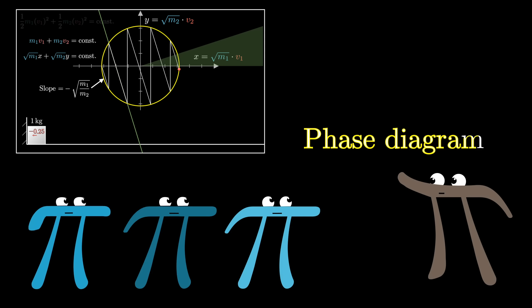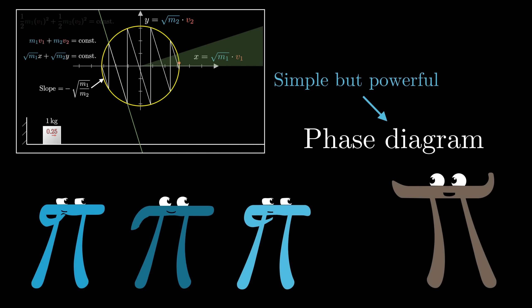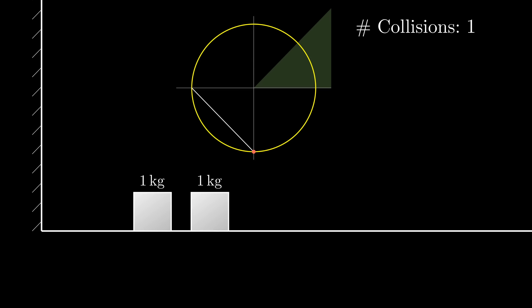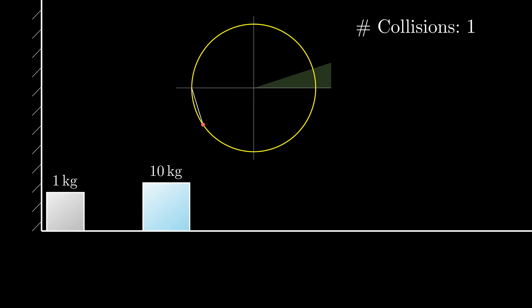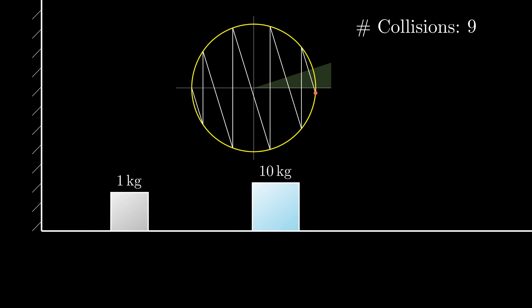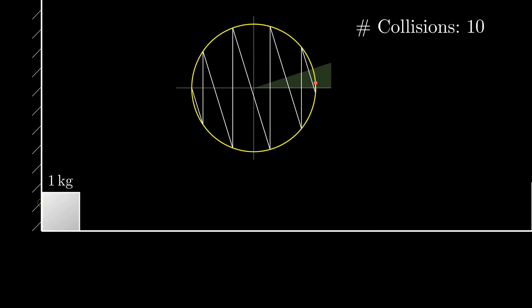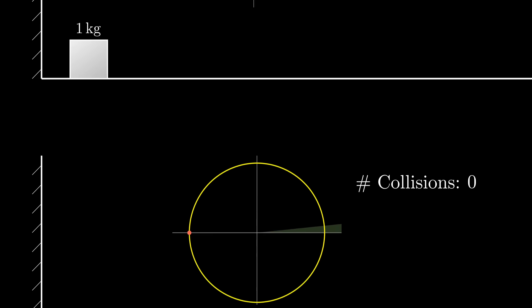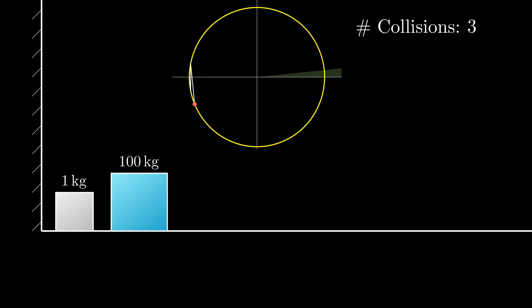What we've drawn here is called a phase diagram, which is a simple but powerful idea in math, where you encode the state of some system, in this case the velocities of our sliding blocks, as a single point in some abstract space. What's powerful here is that it turns questions about dynamics into questions about geometry. In this case, the dynamical idea of all possible pairs of velocities that conserve energy corresponds to the geometric idea of a circle, and counting the total number of collisions turns into counting the total number of hops along these lines, alternating between vertical and diagonal.